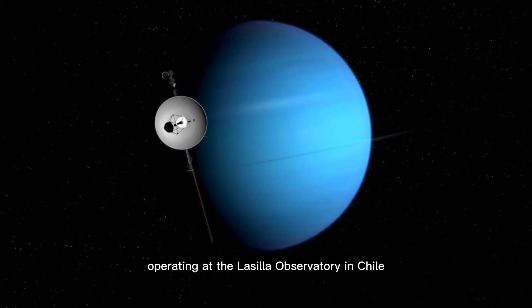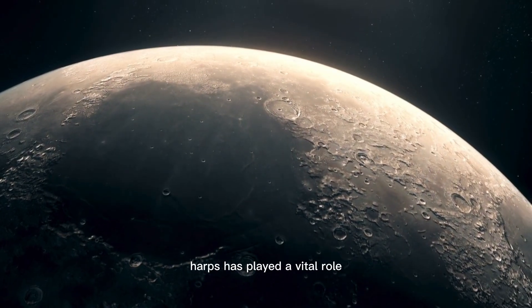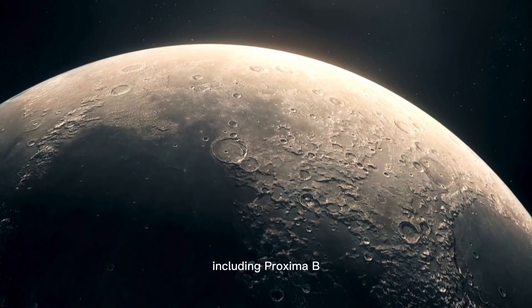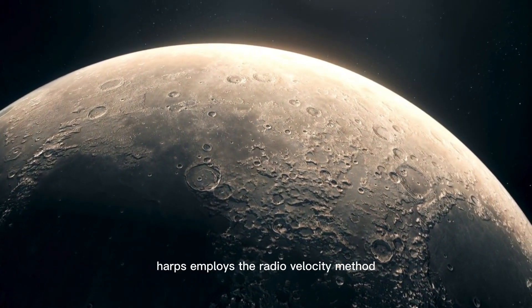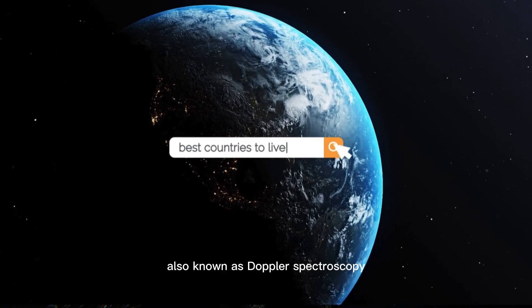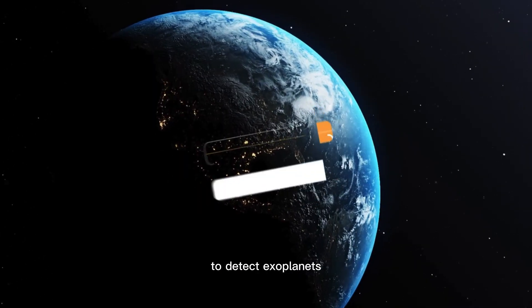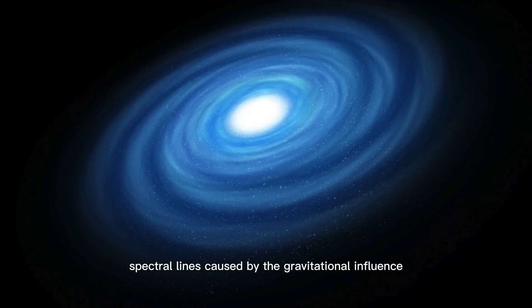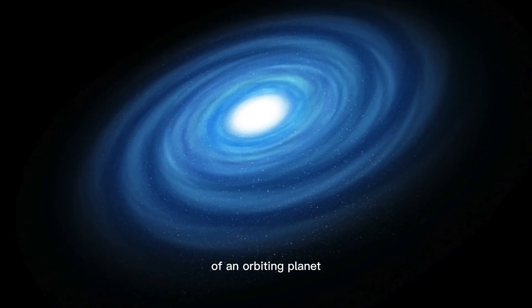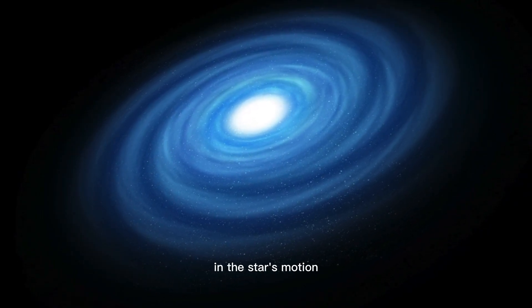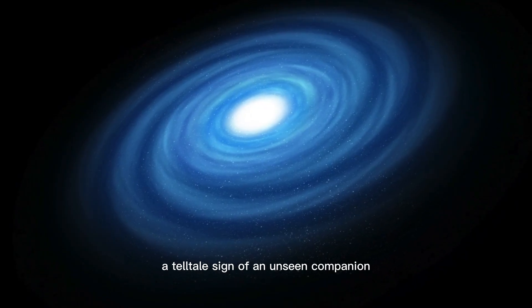Operating at the La Silla Observatory in Chile, HARPS has played a vital role in the discovery of numerous exoplanets, including Proxima b. HARPS employs the radial velocity method, also known as Doppler spectroscopy, to detect exoplanets. This technique measures minute shifts in a star's spectral lines caused by the gravitational influence of an orbiting planet. These Doppler shifts indicate a slight wobble in the star's motion, a telltale sign of an unseen companion.